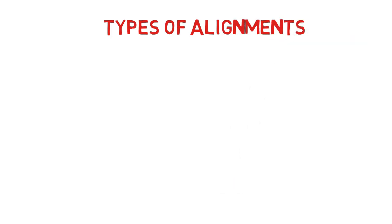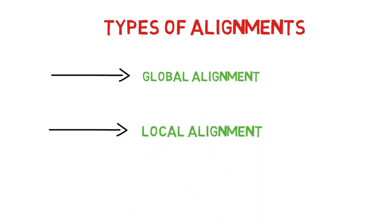There are two types of sequence alignment that bioinformatics deals with. These are global and local alignments. Before going into details, let's talk about some of the features of these two alignments.